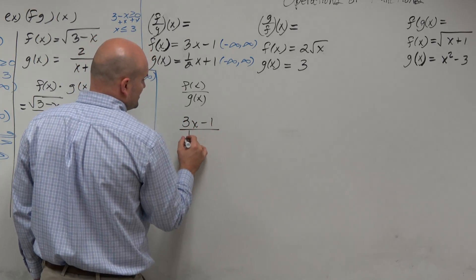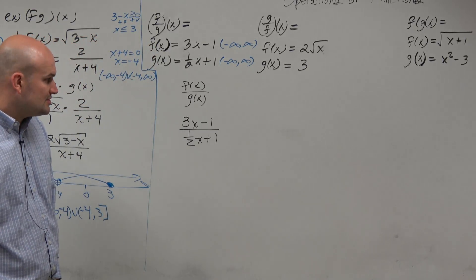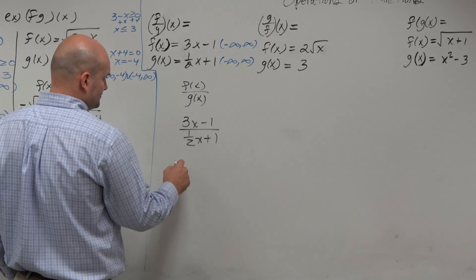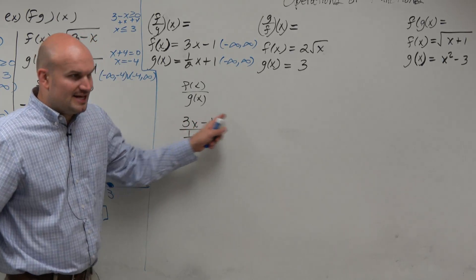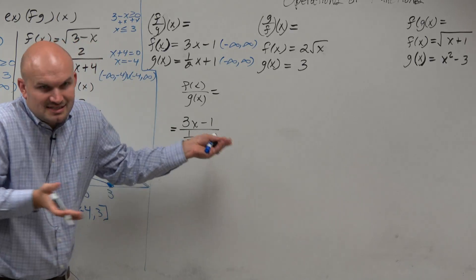3x minus 1 divided by 1 half x plus 1. All numbers don't work here. So we have to go ahead and take our denominator. So anyways, division. That's our division. There's really not much we can do with that. That's simplified.